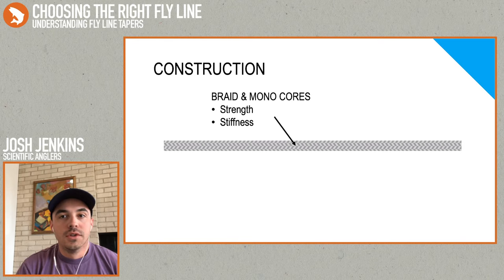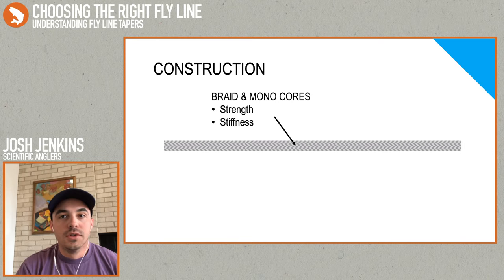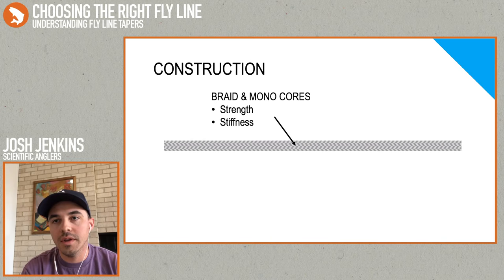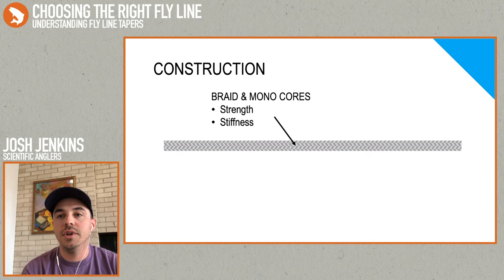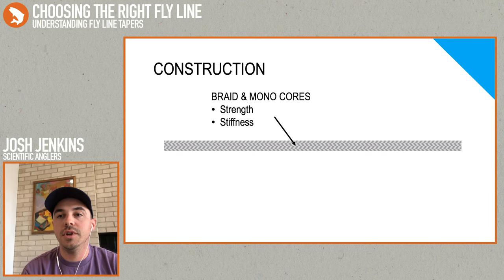Getting back onto the construction — every modern fly line starts with a core. It can be a braid or a monofilament, but that core is mainly there to provide strength to the fly line. The piece of the fly line that you interact with is actually the coating, which is not very strong. So we have to have something running through the center to actually give it strength, especially when fishing for large fish. The diameter and the strength of that core is going to vary with application — you don't need as strong a core in a 3-weight trout line as you do with a 12-weight tarpon line.